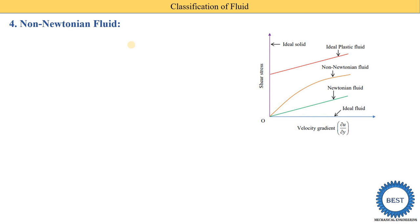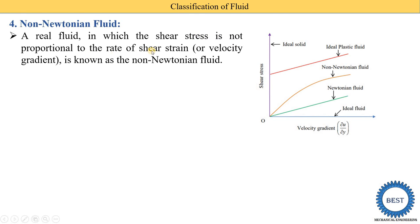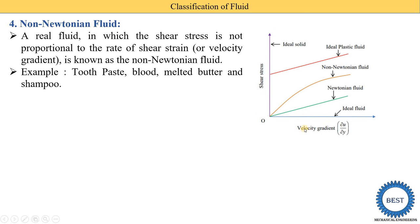The fourth type of fluid is non-Newtonian fluid. Non-Newtonian means a fluid which does not follow Newton's law of viscosity. In other terms, it is a real fluid in which shear stress is not proportional to the rate of shear strain or velocity gradient. In the Newtonian fluid the relationship is proportional, but in non-Newtonian fluid it is not proportional. In the diagram of shear stress versus rate of shear strain, the non-Newtonian fluid follows a curved line. Examples of non-Newtonian fluid are toothpaste, blood, and melted butter.